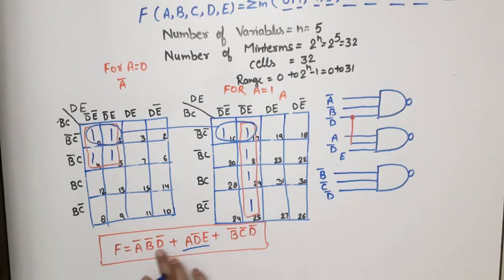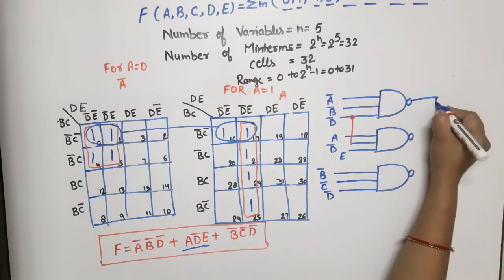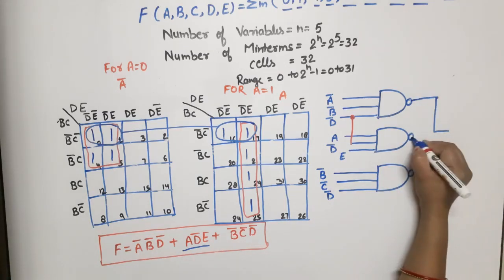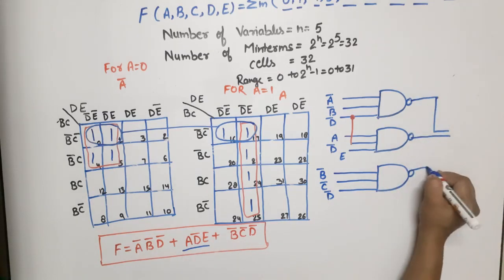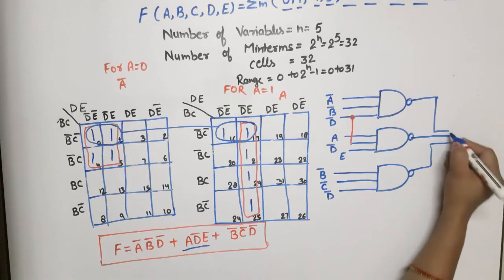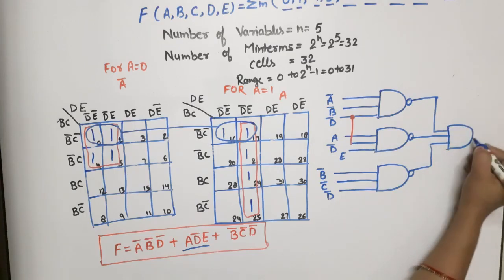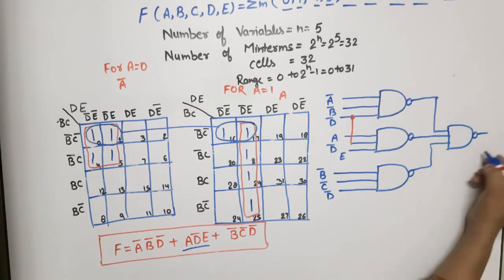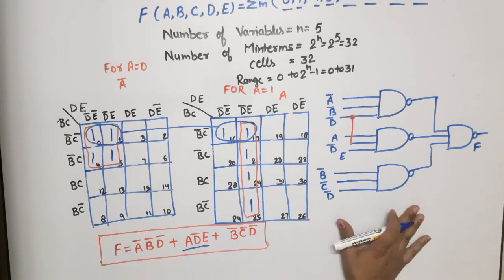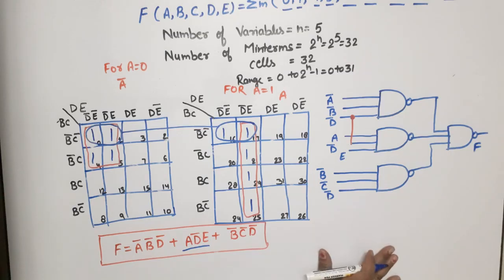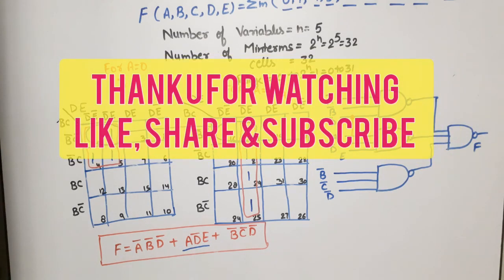For the output, one more NAND gate is used. This is the complete logic diagram for the given expression using NAND gates only. Thank you so much for watching. If you have any doubt in this question, please write it down in the comment section.